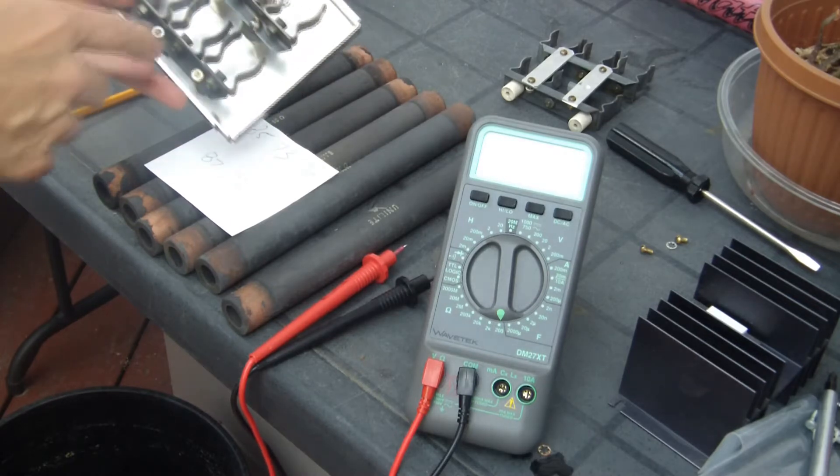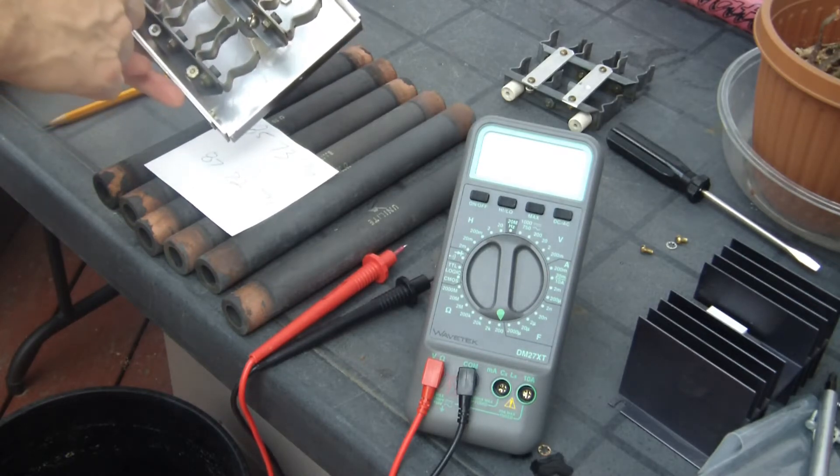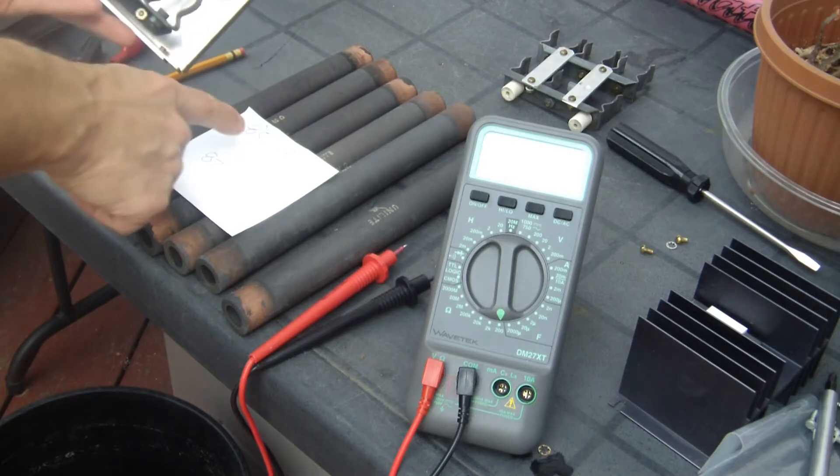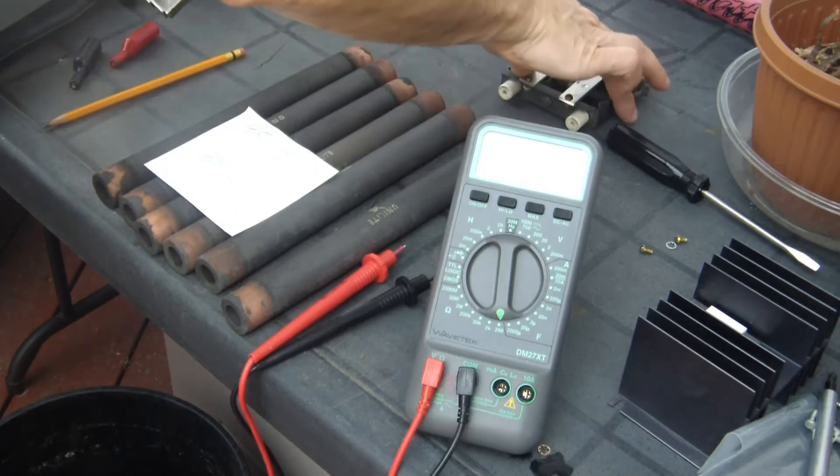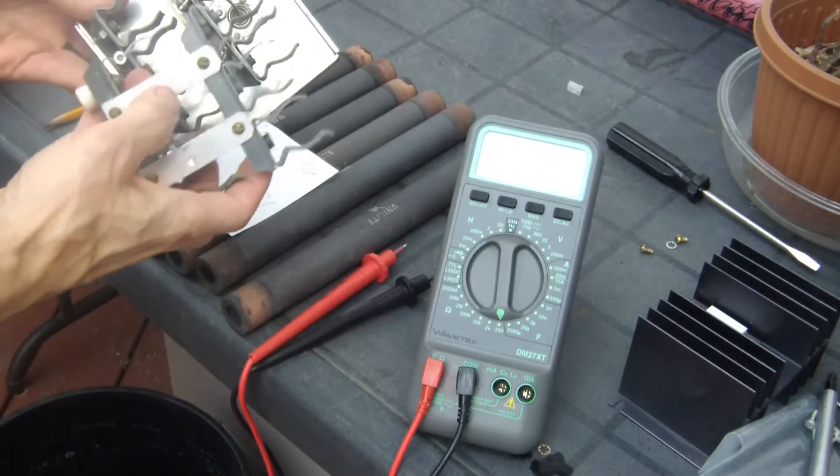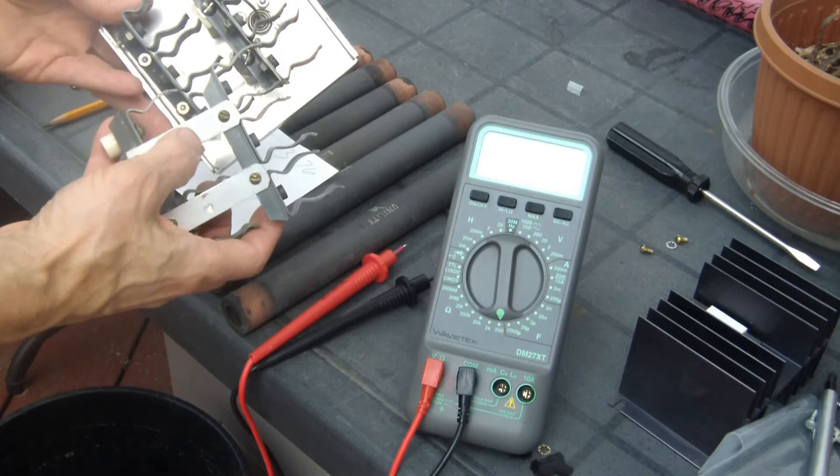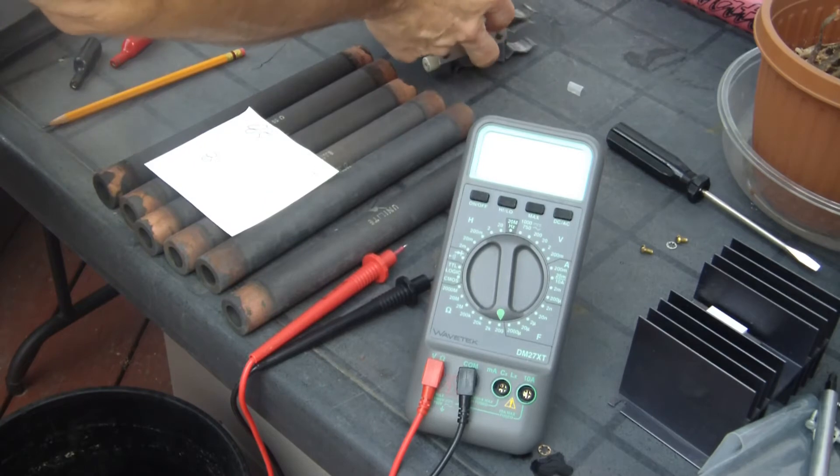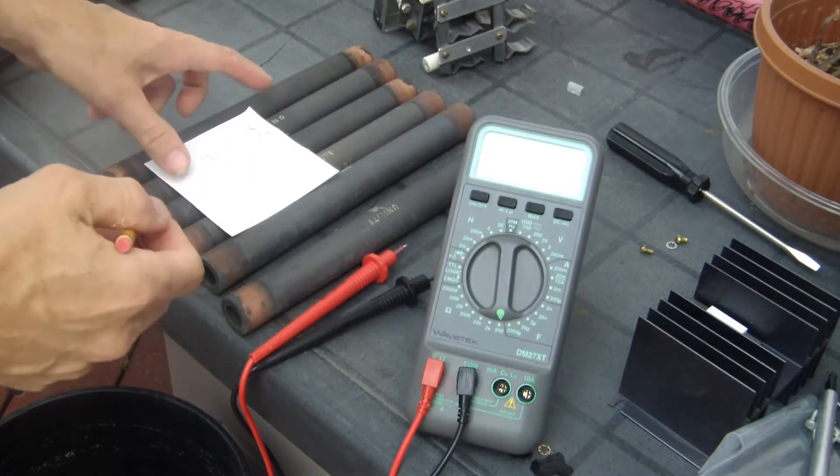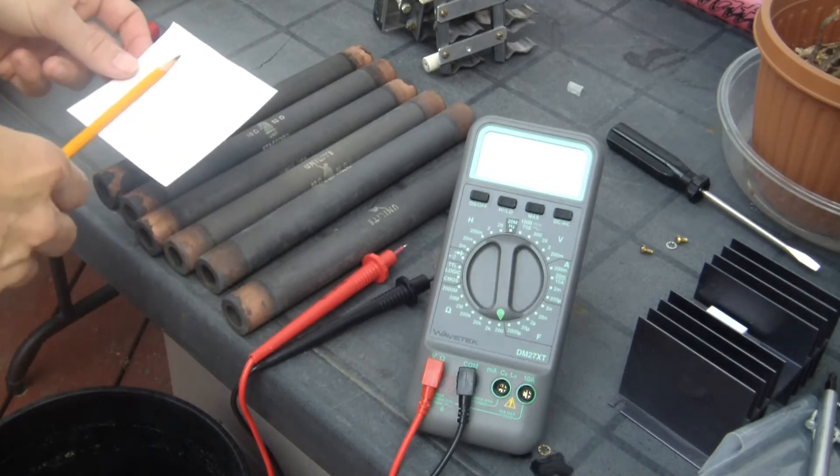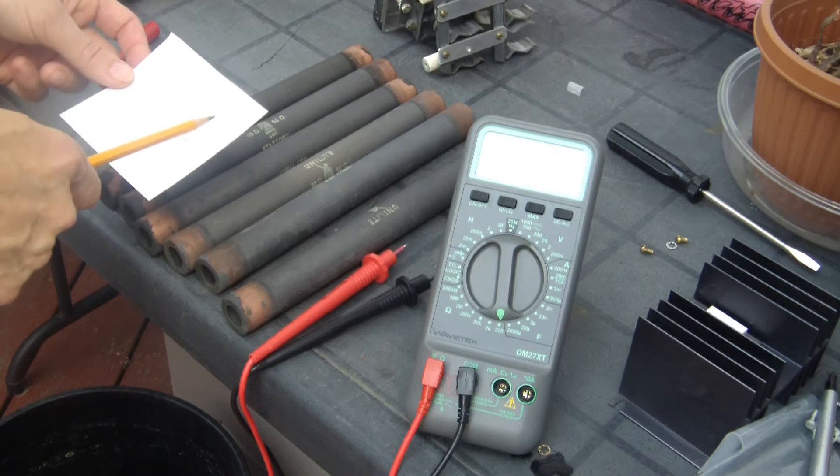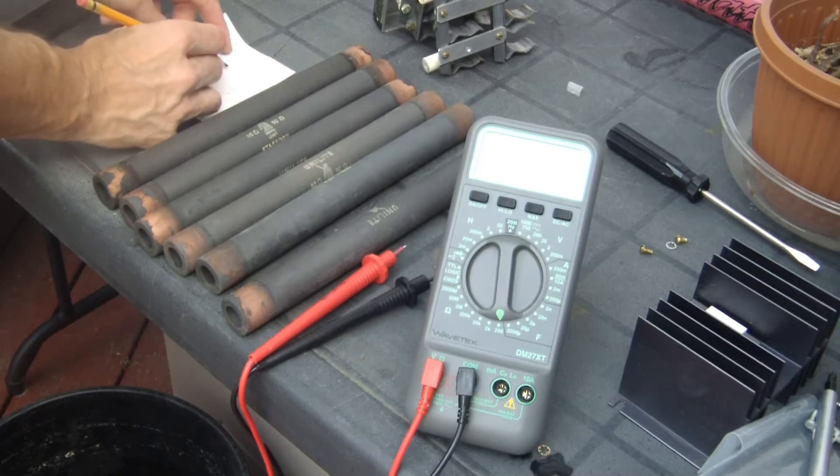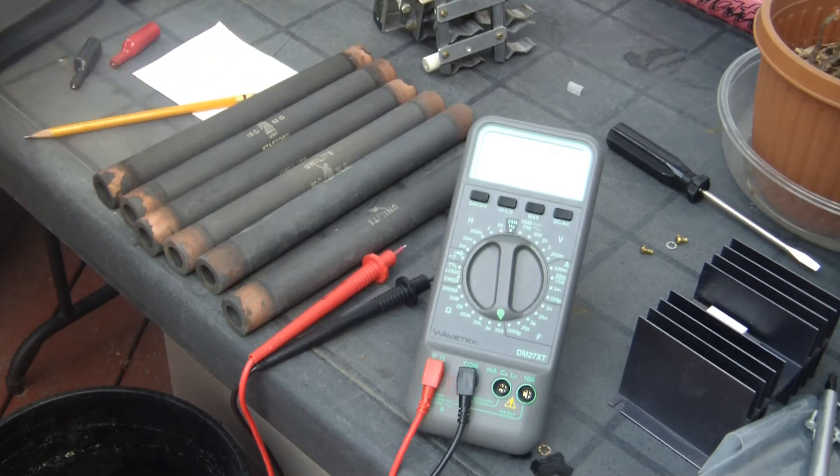So the way these are hooked up: the top three are in parallel, and then they are joined by the bottom three in parallel. So add these up, divide by three, divide by three, and then add together. Supposed to be 52 ohm.